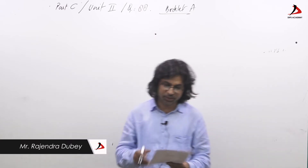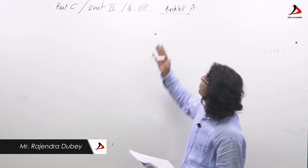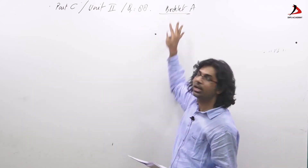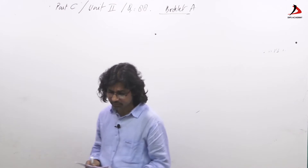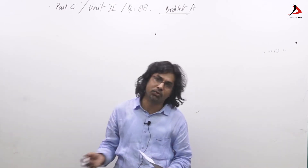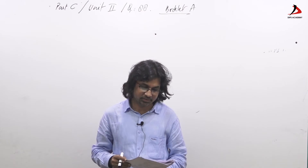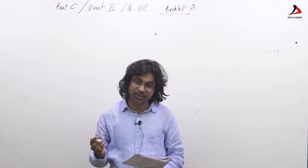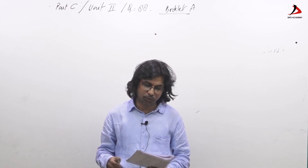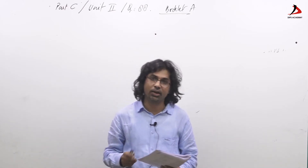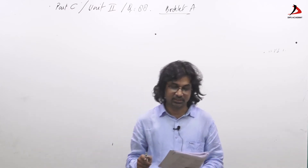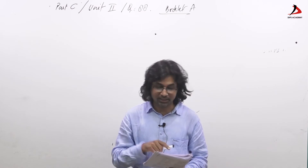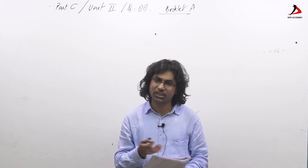Hi everyone. In continuation, here we are going to solve question 88 of Part C, Unit 2, Booklet A. This question talks about irreducibility of a polynomial over Z and over Q[x]. Given: let f(x) be a polynomial of degree greater than or equal to 2, and we have to choose a statement. First: f(x) is irreducible over Z then irreducible over Q. Second: irreducible over Q then over Z, and the other options three and four.